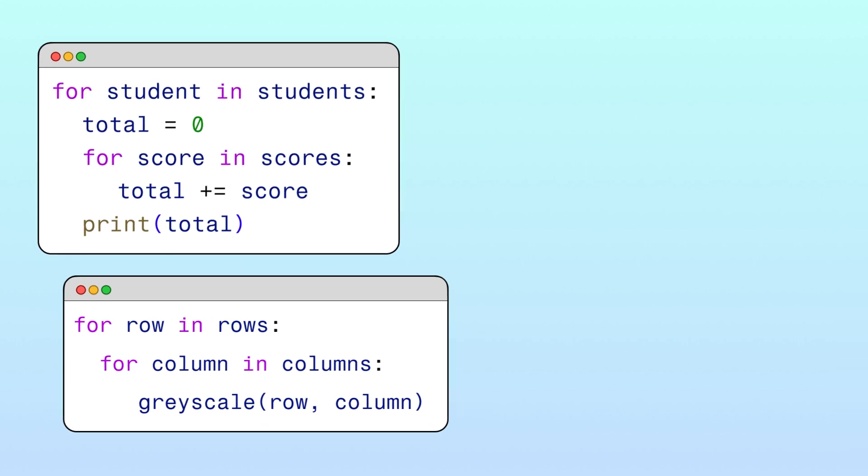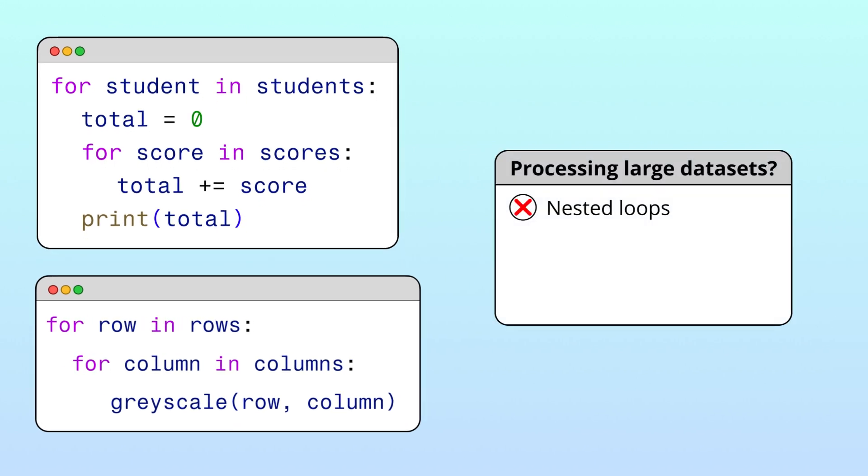If you're using nested loops to process a large dataset, you might want to consider parallelizing your code. By parallelizing your code, you can execute multiple iterations of your loop at the same time, drastically improving efficiency.